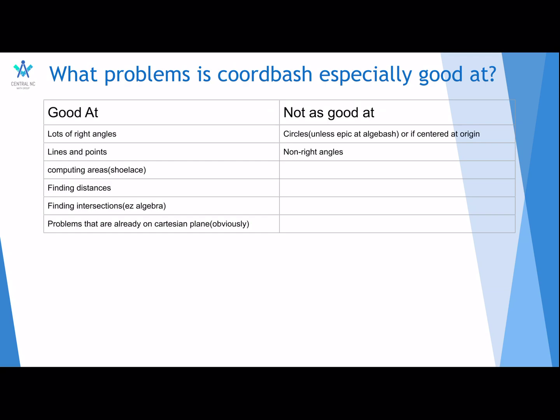Chord Bash is the best method of solving any problem in maths. So you put a figure in geometry on the coordinate plane, aka the Cartesian plane, and it's the first method you approach a geometry problem with, even before trig bash and stuff. So what is it good at? These are some hints that you want to do Chord Bash on a problem. If there's lots of right angles, if there's mostly lines and points, if you need to compute an area, if you need to find a distance, and if you need to find lots of intersections using algebra, and if it's already on the Cartesian plane, you don't want to move it.